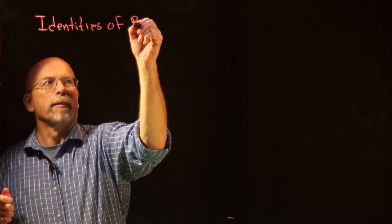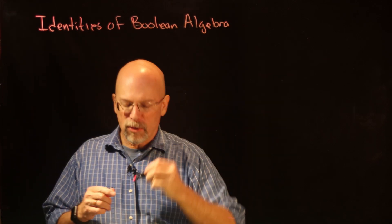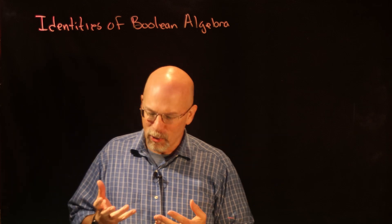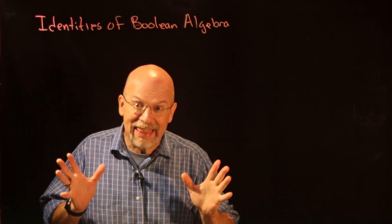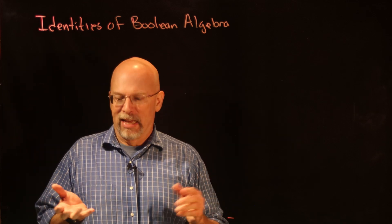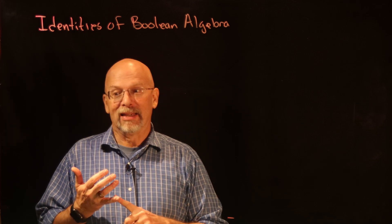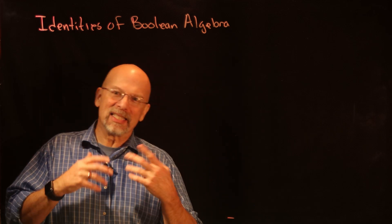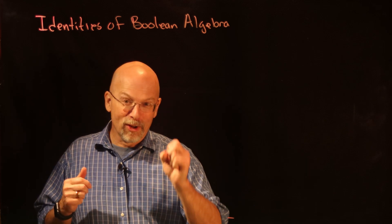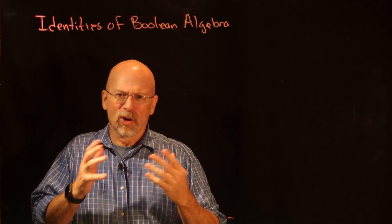Now that we've got our feet wet with manipulation of boolean expressions, let's talk about some identities of boolean algebra. You're all familiar with this idea of an identity — anything times zero equals zero, anything times one equals itself, anything plus zero equals itself. It turns out that in boolean algebra, they work phenomenally well, especially when you only have the values of zero or one.